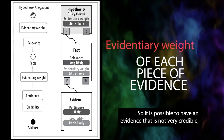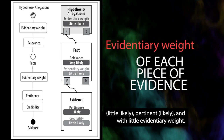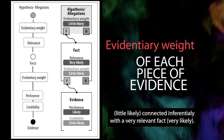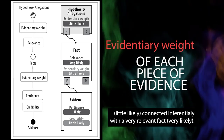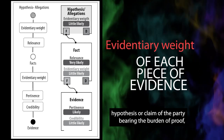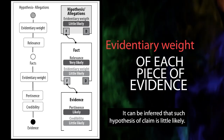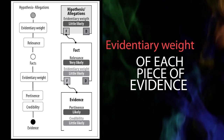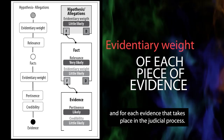So, it is possible to have an evidence that is not very credible — little likely — pertinent — likely — and with little evidentiary weight — little likely — connected inferentially with a very relevant fact — very likely. Based solely on this evidence and on this fact, the hypothesis or claim of the party bearing the burden of proof can be inferred as little likely. This process is repeated for each of the facts and for each evidence that takes place in the judicial process.